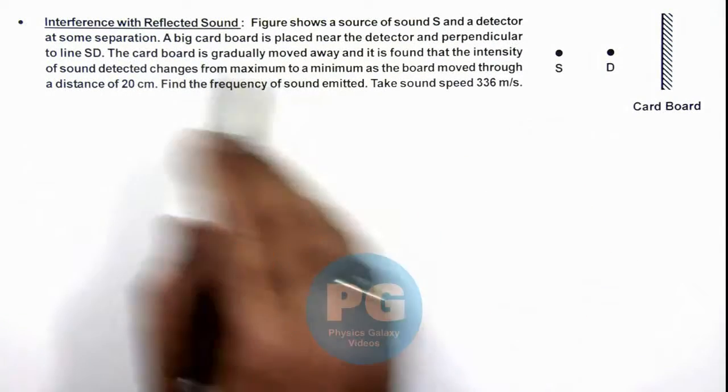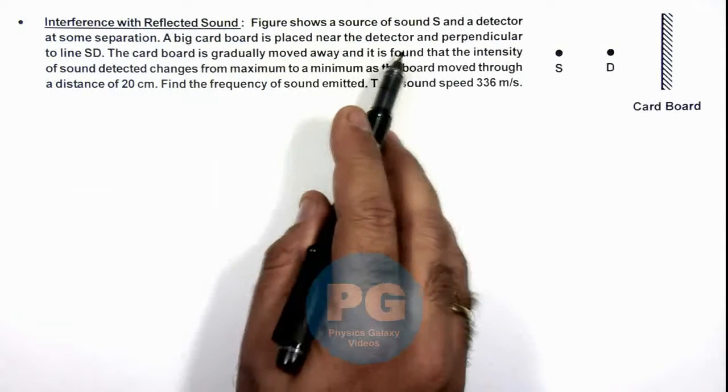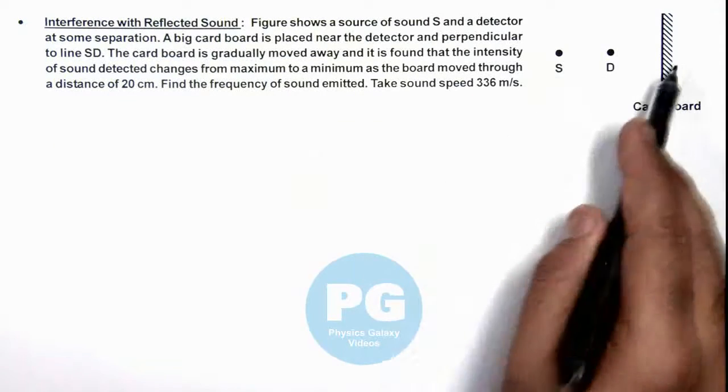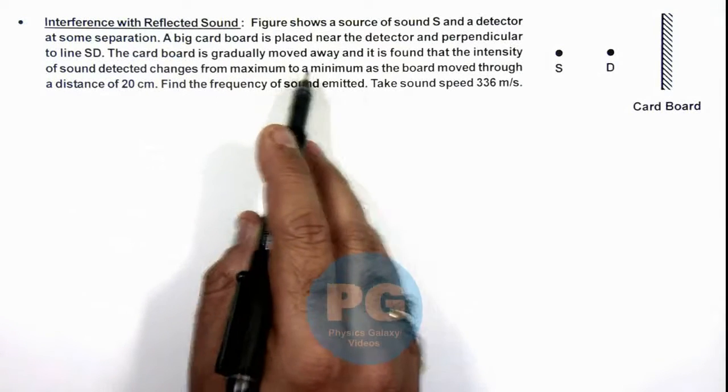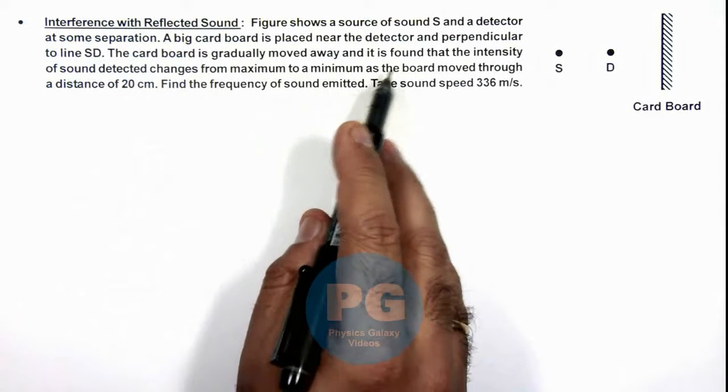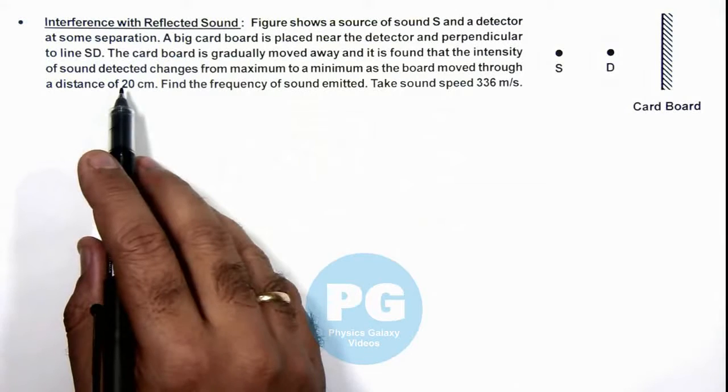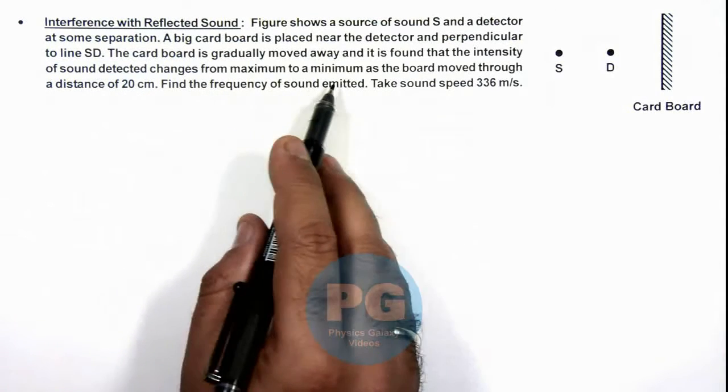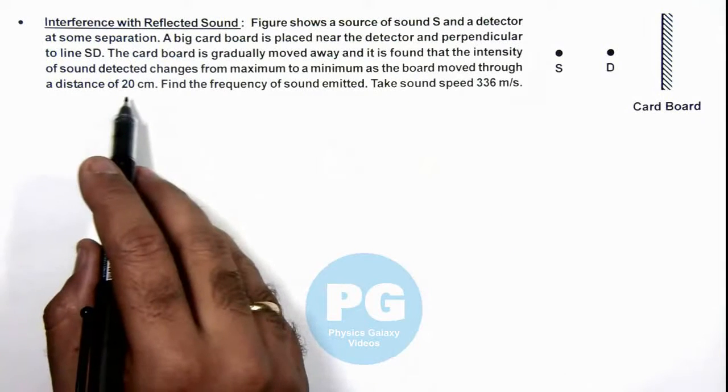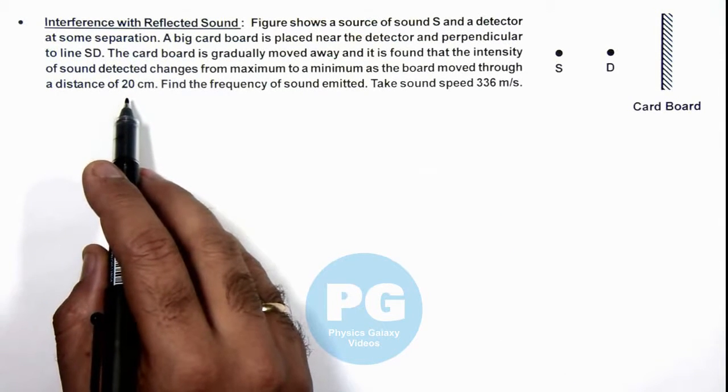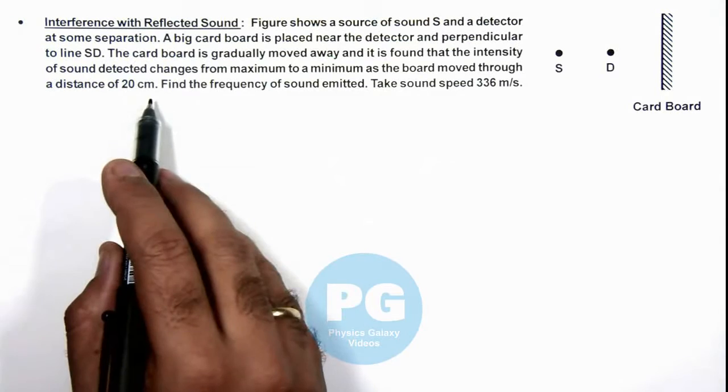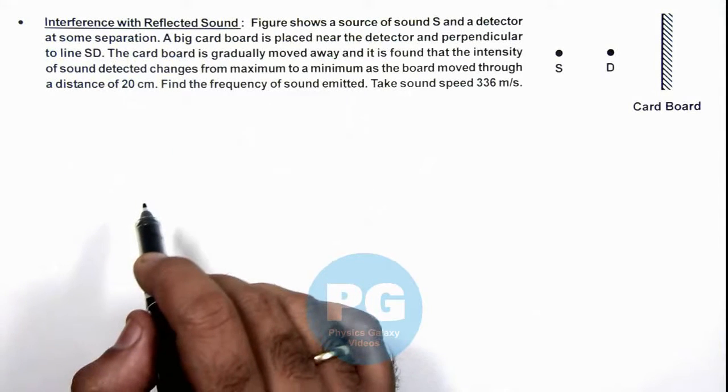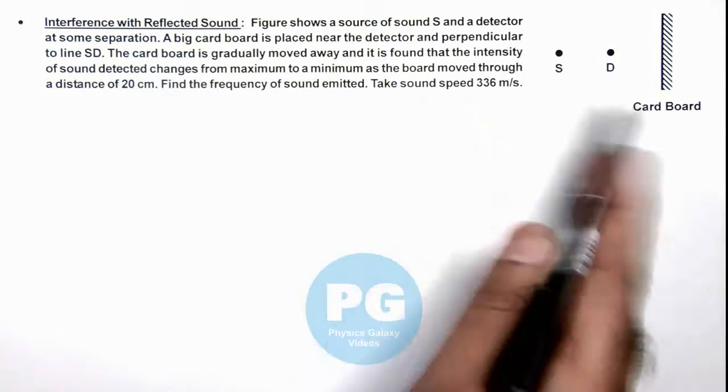A big cardboard is placed near the detector and perpendicular to line SD. The cardboard is gradually moved away, and it is found that the intensity of sound detected changes from maximum to a minimum as the board moves through a distance of 20 centimeters. With this information we are required to find the frequency of sound emitted, and the sound speed is given to us.